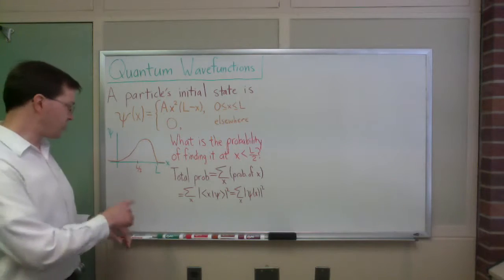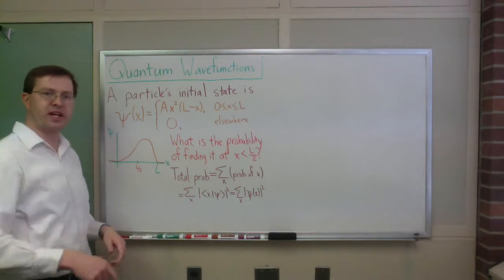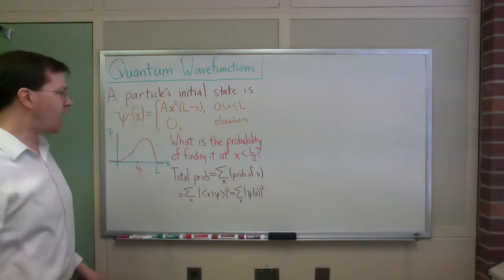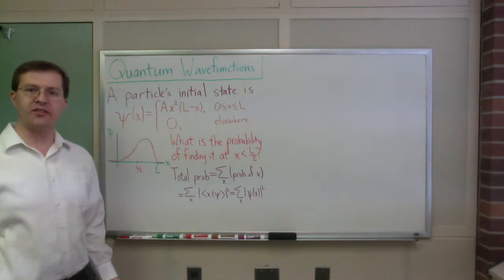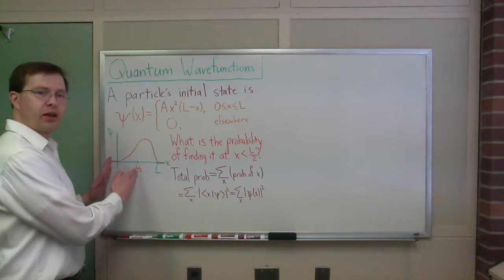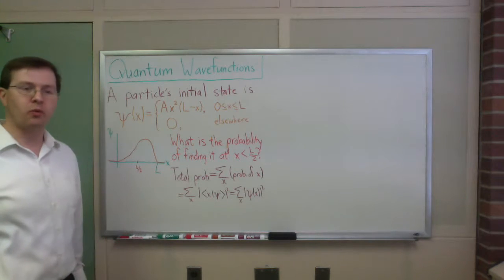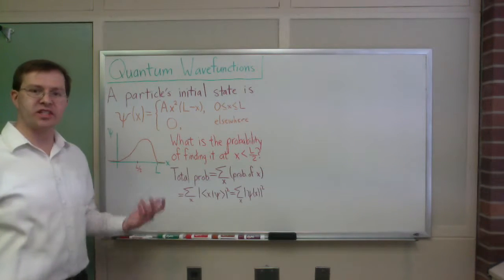So the example I want to talk about, I've got this initial state that I've specified here for a particular particle that has a wave function of A times x squared times L minus x, if you're between 0 and L, and 0 outside of that range. You can see it's continuous, it's sort of parabolic near x equals 0, and comes back down to 0 at x equals L. And I want to know, what's the probability that if I make a measurement, I will find this particle to be between 0 and L over 2?